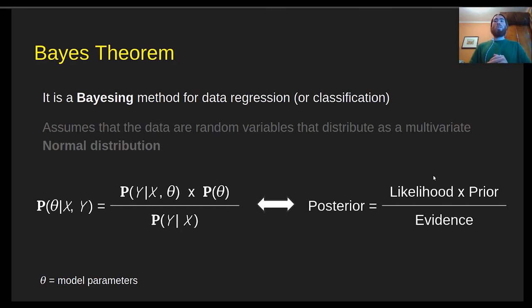Now, we know that this likelihood is just going to be our normal distribution, our Gaussian distribution, because that's the assumption behind the Gaussian process. So that's very simple to estimate.